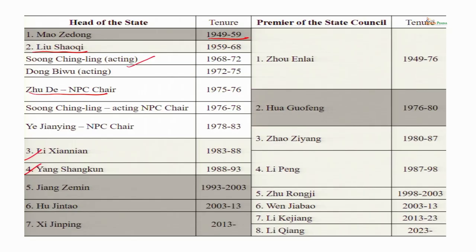Similarly, Hu Jintao also became the president in 2003. The Central Military Commission came to him in 2004. After that, he also occupied the three most powerful positions in China. Then Xi Jinping replaced Hu Jintao as president, General Secretary, as well as chairman of the Central Military Commission. These are the heads of state of China.